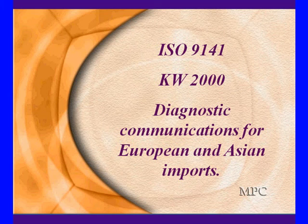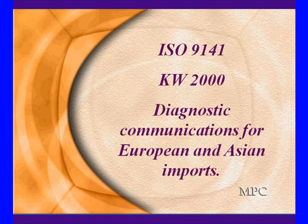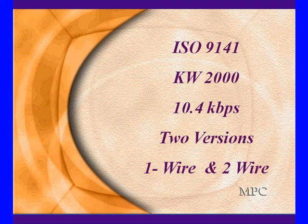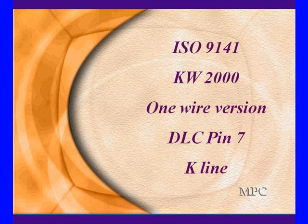We're going to talk about two of the major standards in European and Asian imports: ISO 9141-2 and KW2000. They're used almost exclusively for communications as a scan tool. They both run at 10.4 kilobauds and have two versions, a one-wire and a two-wire.